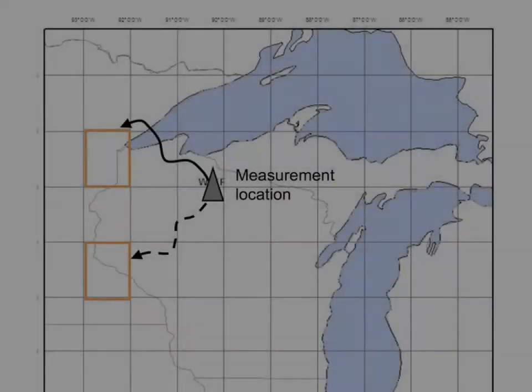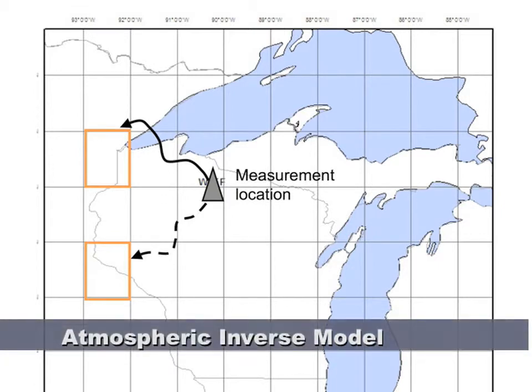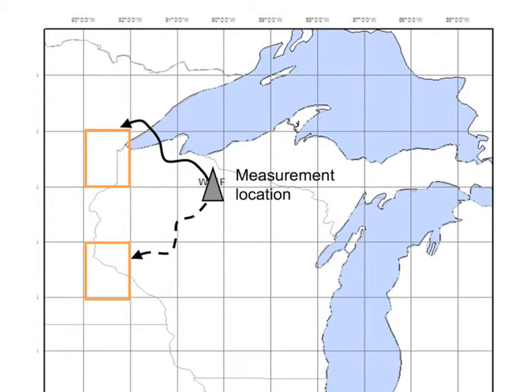My scientific work uses measurements of atmospheric carbon dioxide sampled at various points around the globe to infer the amount of carbon that is continuously being exchanged at the Earth's surface. Variations in atmospheric CO2 can be traced back to surface exchange using an atmospheric inverse model. These models use CO2 measurements with information about atmospheric transport to infer the most likely distribution of carbon sources and sinks on a global grid within a statistical framework.